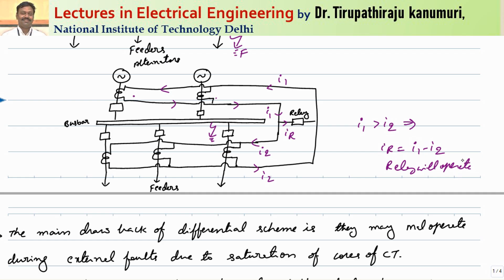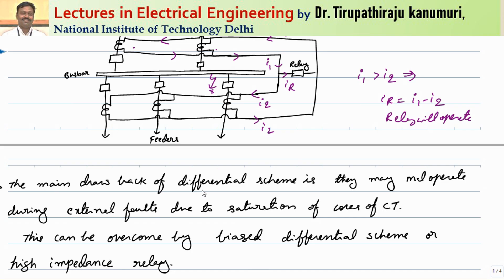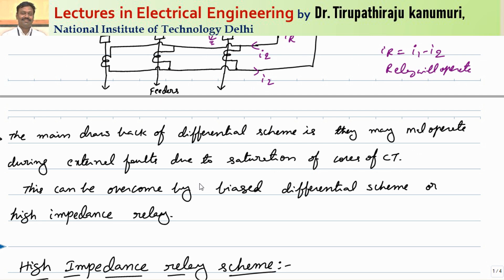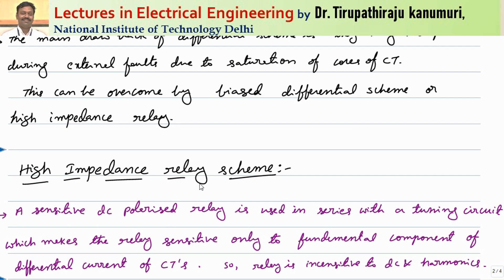Repeating once again: whenever the fault happens inside the protected zone — whether at your circuit breakers or on the busbar — the current entering will not be equal to current leaving. The difference in current will pass through your relay and your relay will operate. However, this has one major disadvantage: no two CTs will have the same characteristics. Because of that, some CTs may saturate earlier than the remaining CTs. So for external faults — also called through faults — different CTs will saturate at different points, causing different secondary currents, which leads to mal-operation of your relay. To overcome this, we use either a bias differential scheme or a high impedance relay.